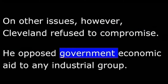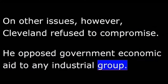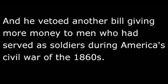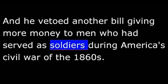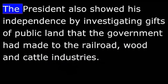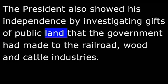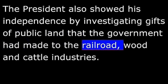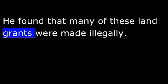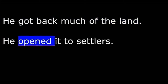He opposed government economic aid to any industrial group. He vetoed a bill giving aid to farmers whose crops had failed, and he vetoed another bill giving more money to men who had served as soldiers during America's Civil War of the 1860s. The president also showed his independence by investigating gifts of public land that the government had made to the railroad, wood, and cattle industries. He found that many of these land grants were made illegally, got back much of the land, and opened it to settlers.